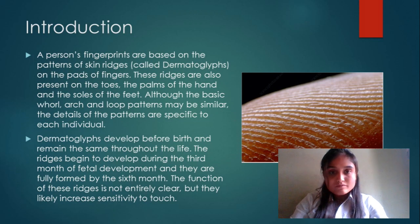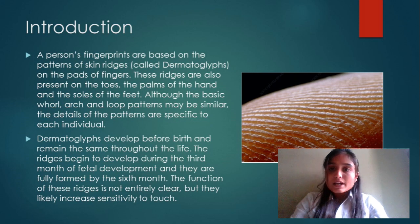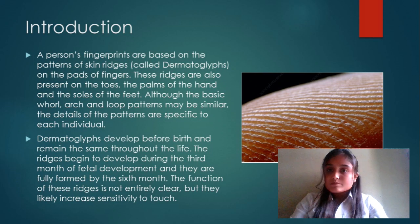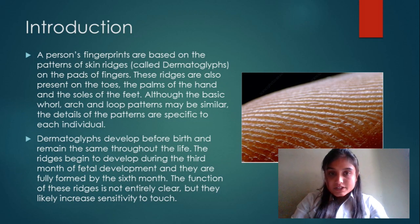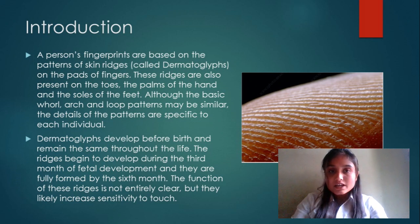A person's fingerprints are based on the skin ridges, called dermatoglyphics. These are present on the fingers, the toes, the palm of the hand, and the sole of the feet. These ridges form different patterns — mainly arch, loop, and whorl pattern. The basic ridge shape, size, and spacing is directly influenced by genetic factors.